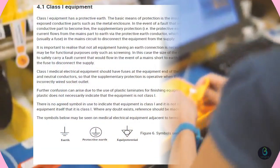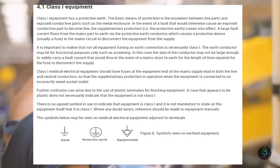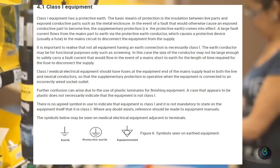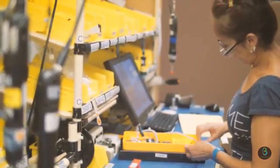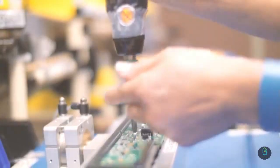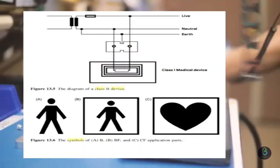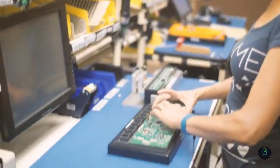First, in this standard, each instrument has a class. Class 1: live part covered by basic insulation and protective earth. Class 2: live part covered by double or reinforced insulation. Class IP: internal power supply.